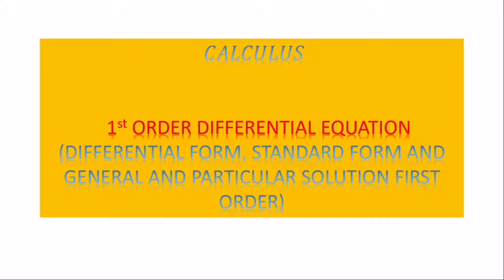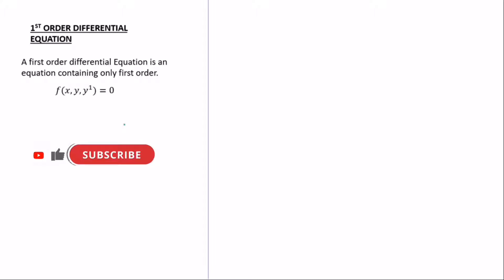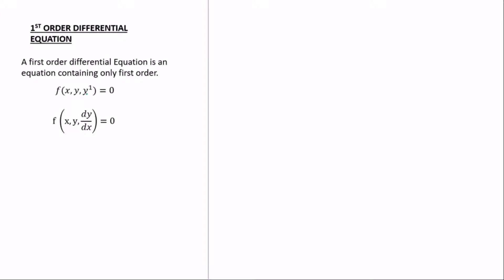One may ask: what is a first-order differential equation? A first-order differential equation is an equation containing only the first derivative. As discussed in my previous video on order, the order tells us how many times an equation can be differentiated. So a first-order equation means you can differentiate the function only once. The differential equation F(x, y) contains x and y, and it equals zero.